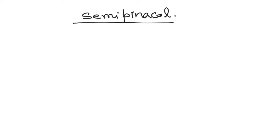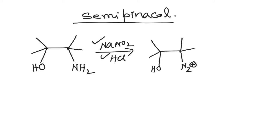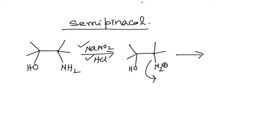So what is a semi-pinacol rearrangement? It is like a pinacol rearrangement, but here you don't have a choice. Let's say you have this compound where you have an OH on one side and an NH2 group on the other side, and you treat this with NaNO2/HCl. This is a diazotizing condition, and in this condition the NH2 will be converted to N2+, which is a leaving group, and from this compound the N2 can be eliminated, giving you this carbocation.